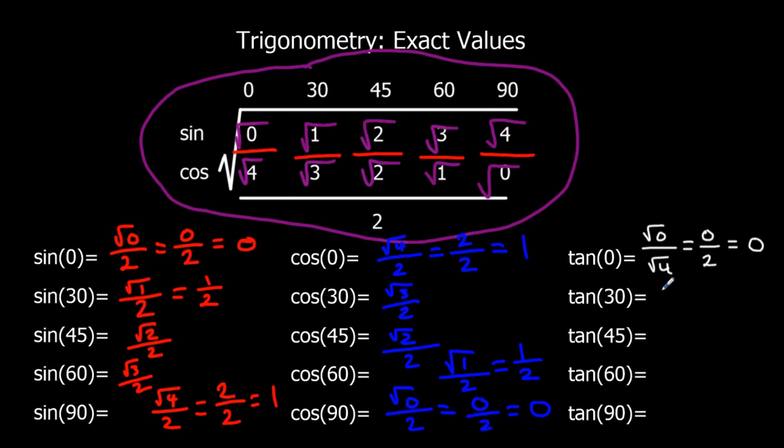Tan 30 is root 1 over root 3, which simplifies to 1 over root 3. Tan 45 is root 2 over root 2. Anything divided by itself is 1, so tan 45 is 1.